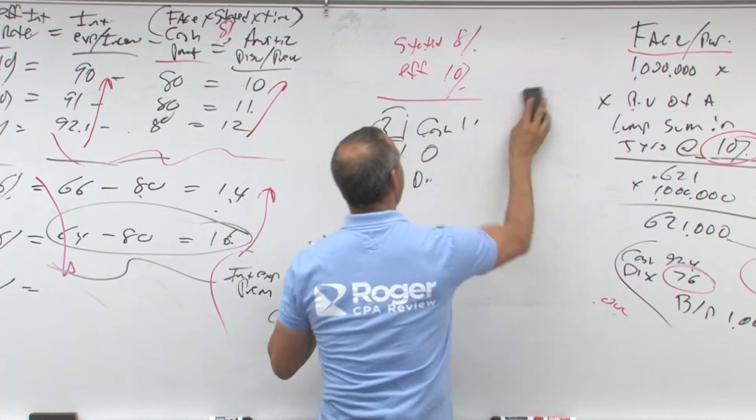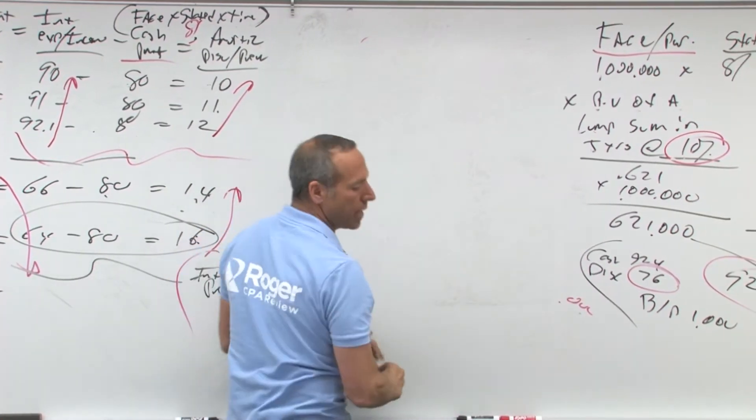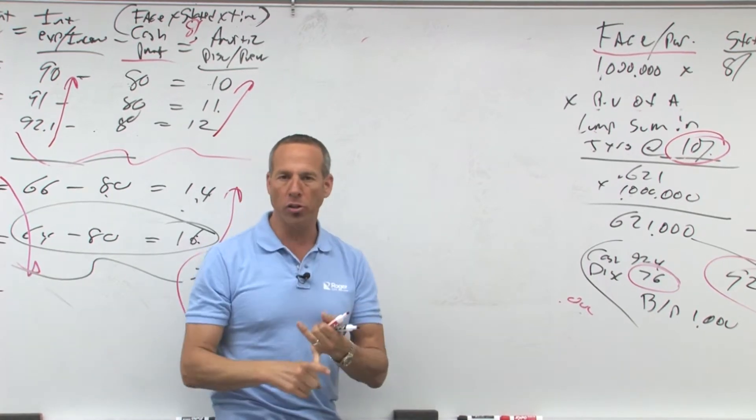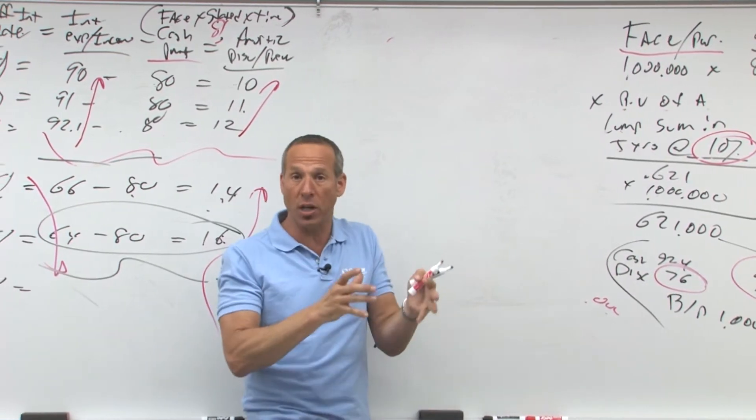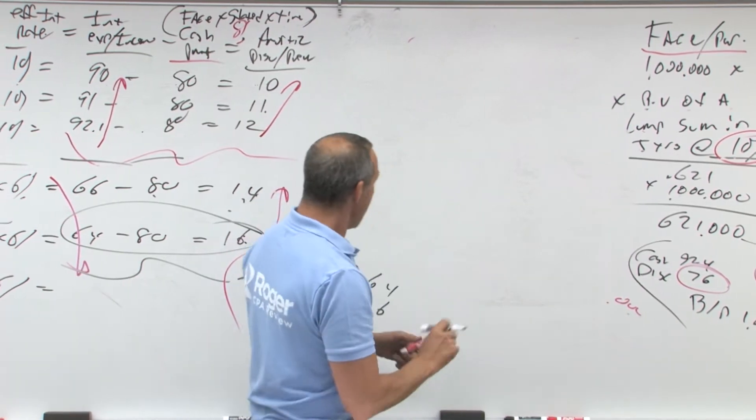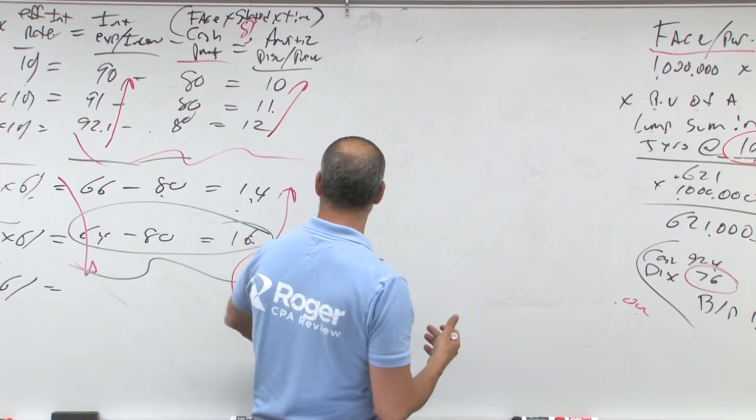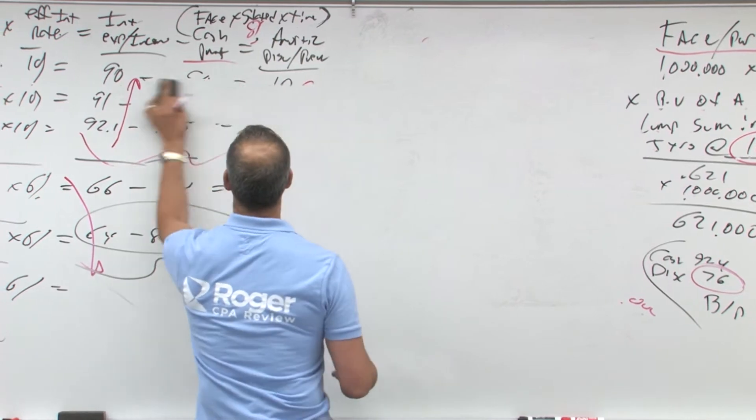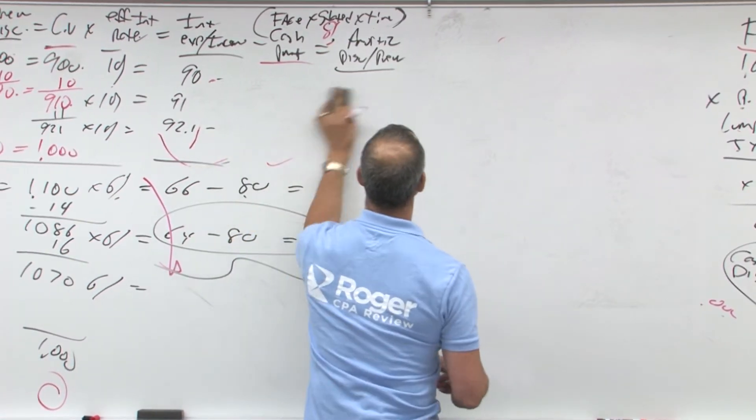Now early retirement of bonds. So what this says is the bond may be called, it may be retired prior to once it matures. In other words, it's a five year bond, but two years in they call it back. Basically, it's the opposite of the entry we just did. So as we look through this, it's the opposite of the journal entry.